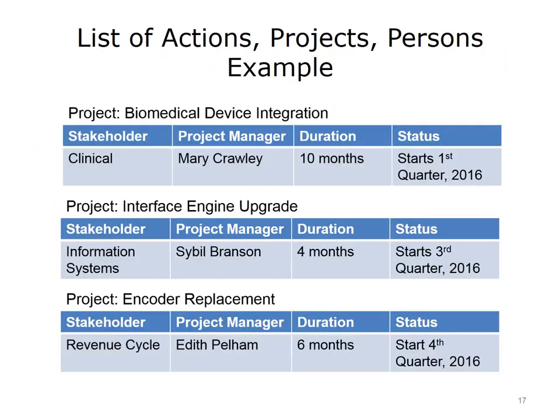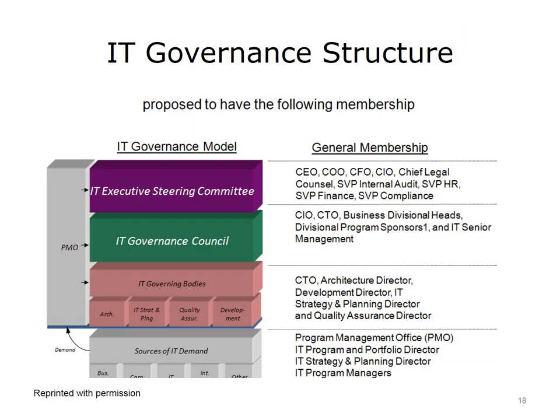Here we see an example of how the individual IT projects are broken down by stakeholder, project manager, duration, and status. It is important to have a listing of individual projects. The list should be complete and as detailed as possible.